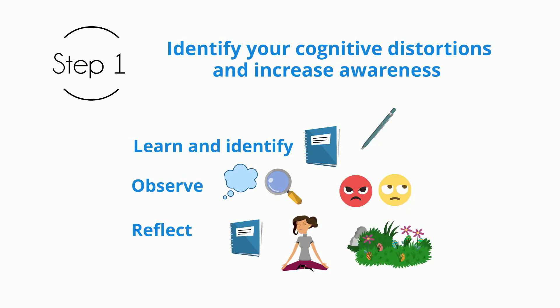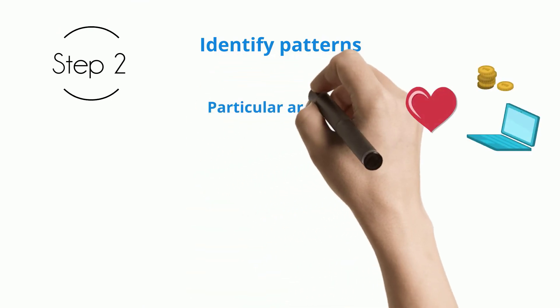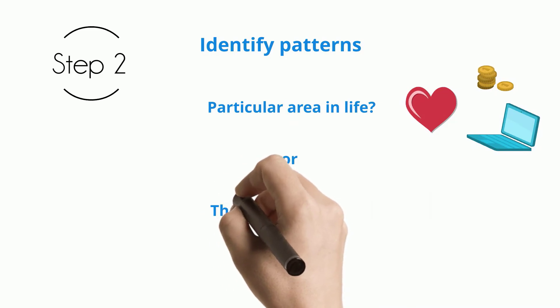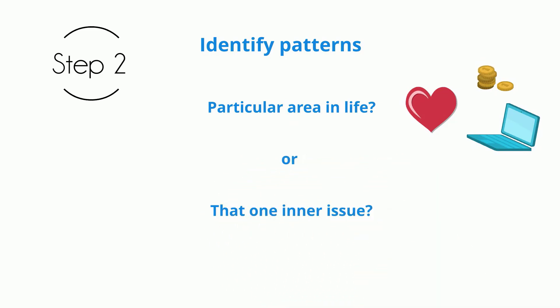Let's take a look at step two: identify patterns. As you notice more and more of your distortions, you may see that you have them in a particular area, such as related to work, relationships, appearance, and so on. Maybe if you solve that one inner issue that is so dominant, you may get rid of many distortions all at once. So how do we solve these issues or distortions then?